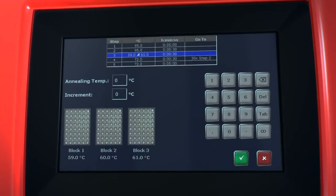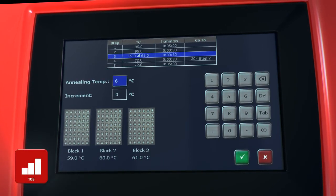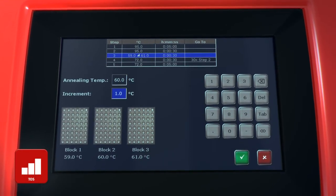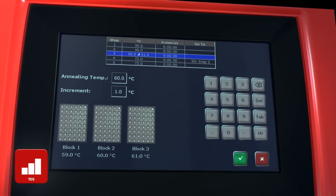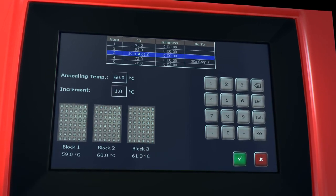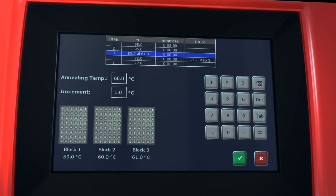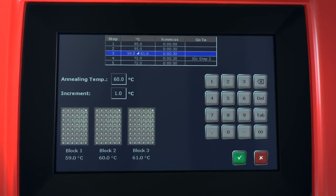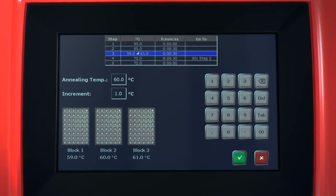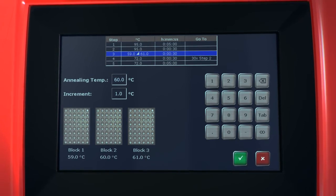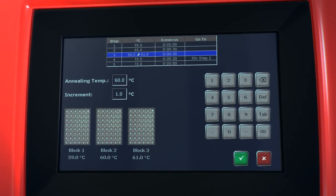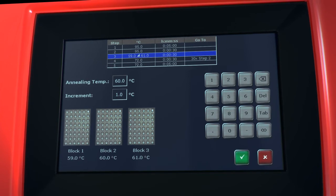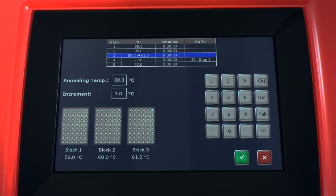By using the Biometra Trio temperature optimization step tool, new primer pairs with unknown annealing temperatures can be tested quickly and optimized in very short time. The temperature optimization step tool makes use of the three sample blocks and provides three different temperatures for a selected program step. Only the primer annealing temperature and the temperature increment have to be filled in to program a gradient-like TOS step.